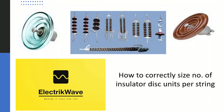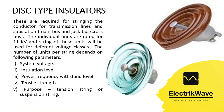Welcome. Let's understand how to correctly size the number of insulator disk units per string. Let's see the basics of disk type insulator requirements. These are required for stringing the conductor for transmission lines, substations, main bus, and jack bus/cross bus. The individual units are rated for 11 kV, and a string of these units will be used for different voltage classes.